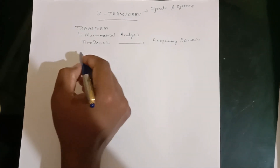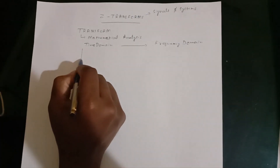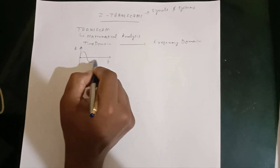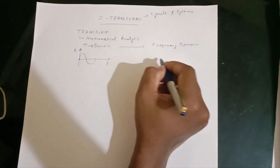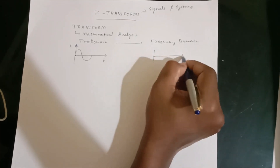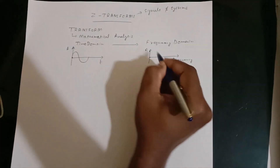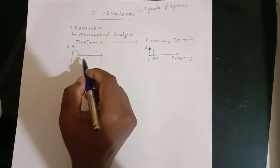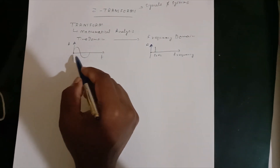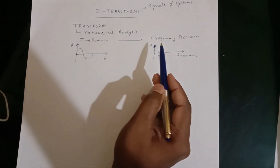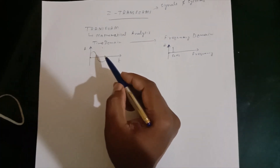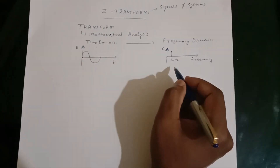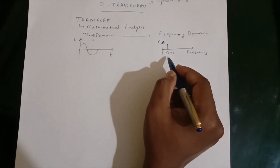What do we mean by time domain and frequency domain? A signal in the time domain can be represented with its amplitude on the y-axis and time on the x-axis — this is the most common way of representing a signal. A signal represented in the frequency domain has frequency on its x-axis and amplitude on its y-axis. The most important application of transforms is that when a signal is in the time domain, it cannot be easily mathematically analyzed; it is very difficult to analyze signals with different frequencies. A signal in the frequency domain is very easy to analyze.